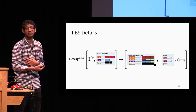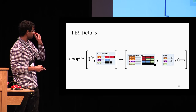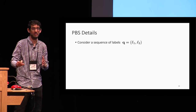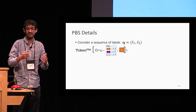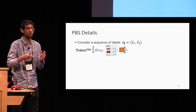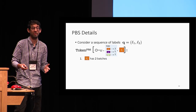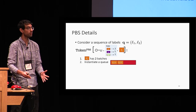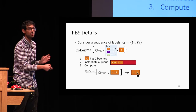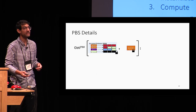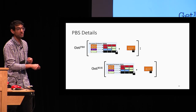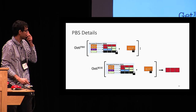Consider a query sequence of two labels: label one and label two. The token algorithm takes the key, the state, and label one as input. It fetches the number of batches for label one from the state — here, two — then instantiates a queue with tokens for both batches. It sends the token for the first batch to the server, then updates the queue by removing what was sent. The get algorithm of PBS simply runs the get algorithm of the encrypted dictionary using the token to output the answer.